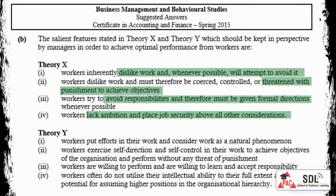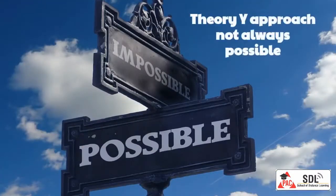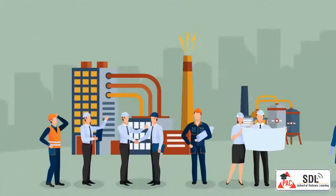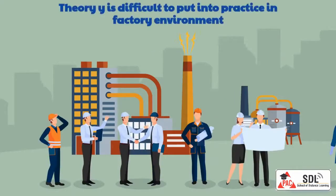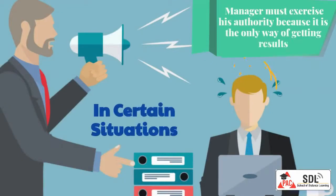In Theory Y: putting effort into work is as natural as play; workers apply self-direction and self-control to work; workers usually accept and then take responsibility; and at work, the intellectual potential of workers is only partly utilized. McGregor suggested that a Theory Y approach is not always possible or advisable, as Theory Y is difficult to put into practice in a factory environment. There will be some situations when the manager must exercise his authority because it is the only way of getting results.